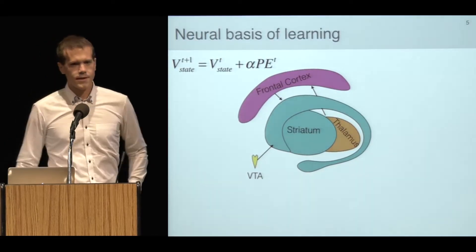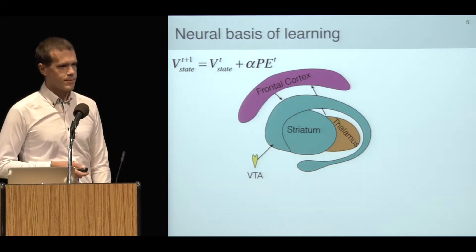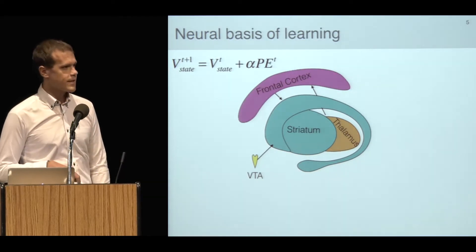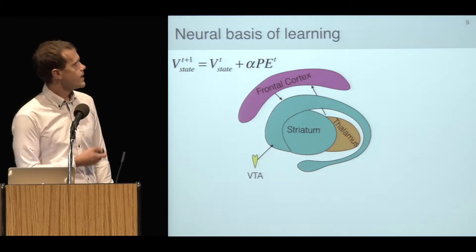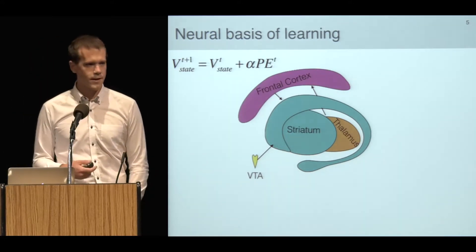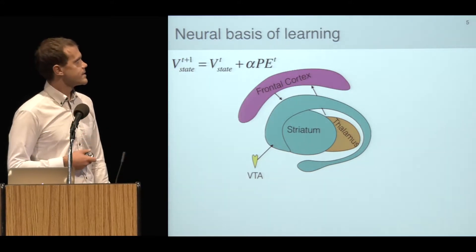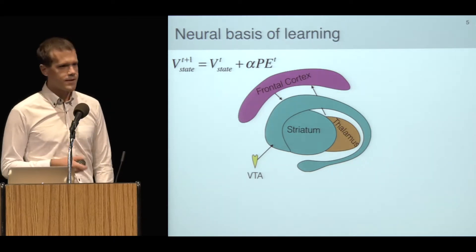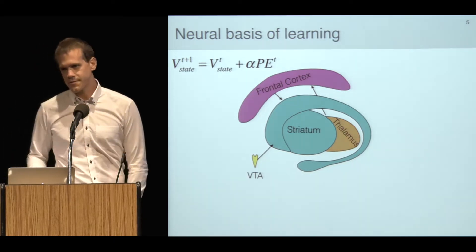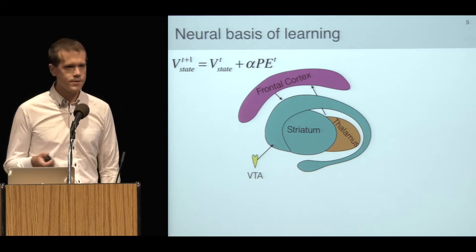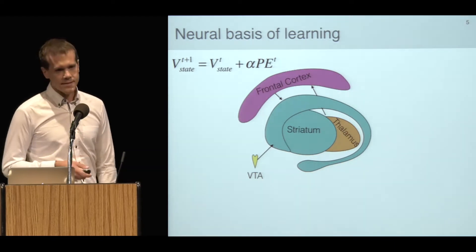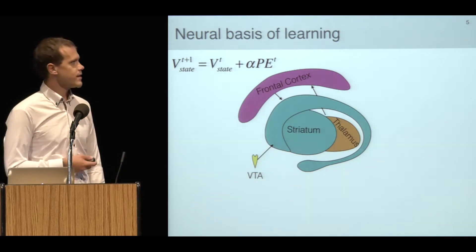This is primarily a neuroscience talk. I wanted to start with some key concepts that are important for understanding my data. Up on the top left is a version of the Rescorla-Wagner update rule. It just says that an agent learns values V about different states of the world, and updates these values in response to prediction errors.